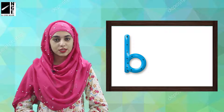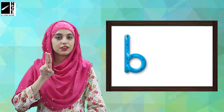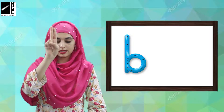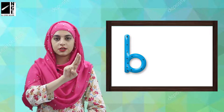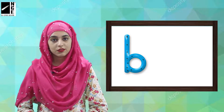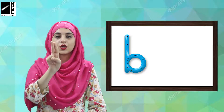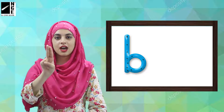Now do the friendship with me. B is down and down. Go up and then turn around. Very good. Now do the tracing again with me. B comes down and down. Go up and then turn around. Very good. We have friendship with B.